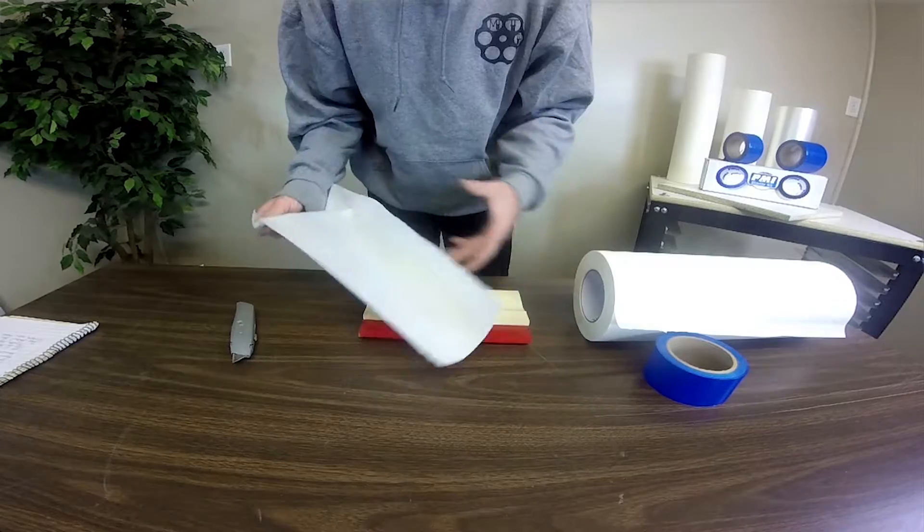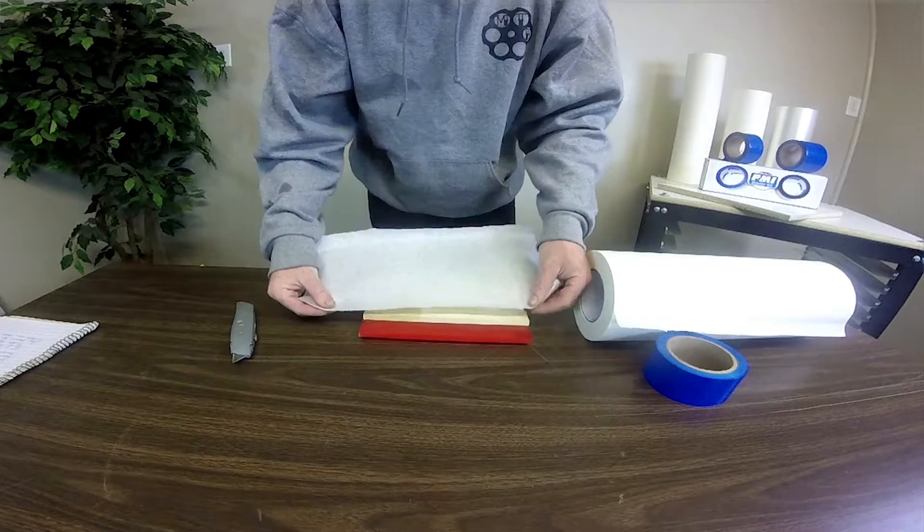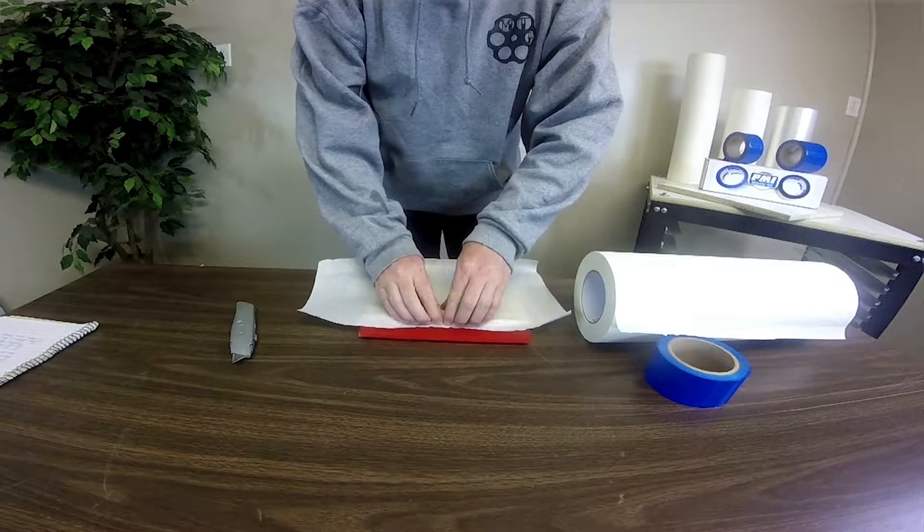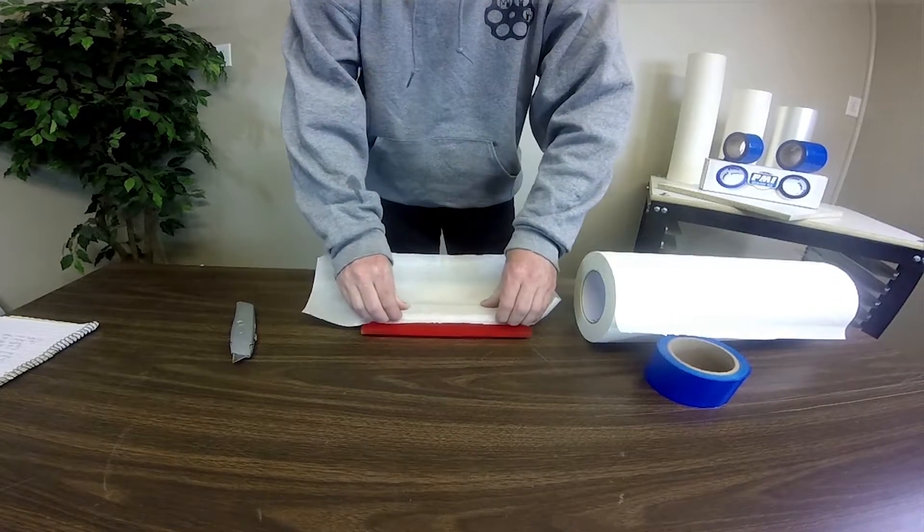And put the edge of the tape right over onto the blade of your squeegee and push it down on that crevice.